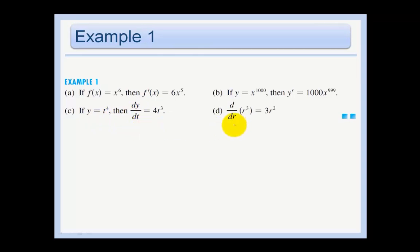And here we can just say d/dr of r cubed. That's saying take the derivative with respect to r of the function r cubed. And that's just 3r squared. So this introduces you to the important notation that we need to be familiar with.